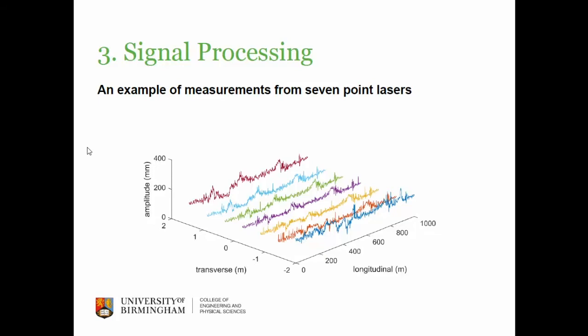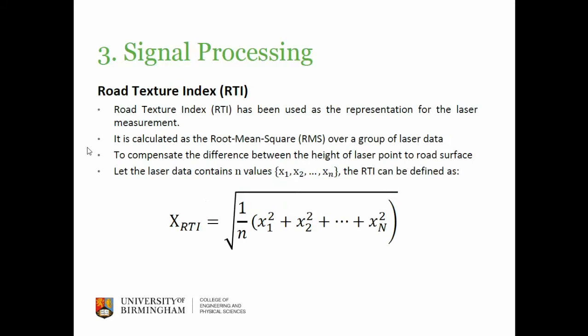Here I'll give you an example of the data from the point laser. For each point laser, you receive a vector in the longitudinal direction. In terms of the transverse direction, the locations depend on how you position your point lasers. In all cases, they are approximately some meters apart between each one.